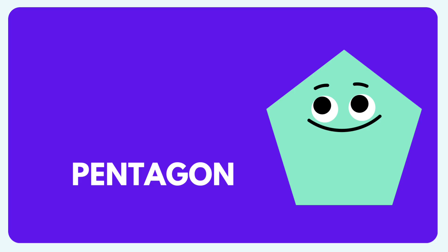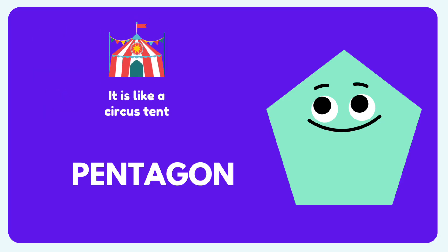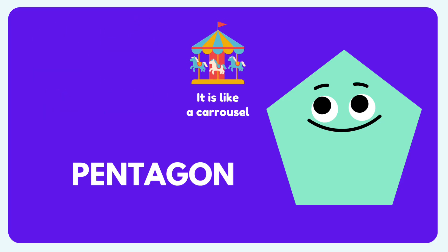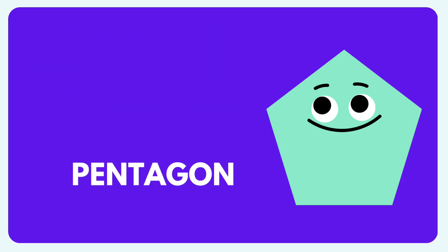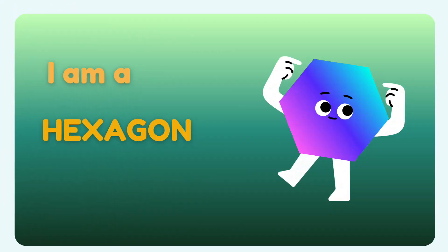For example, like a house, like a circus tent, and like a carousel. All these objects can be found in the form of a pentagon. I am a hexagon.